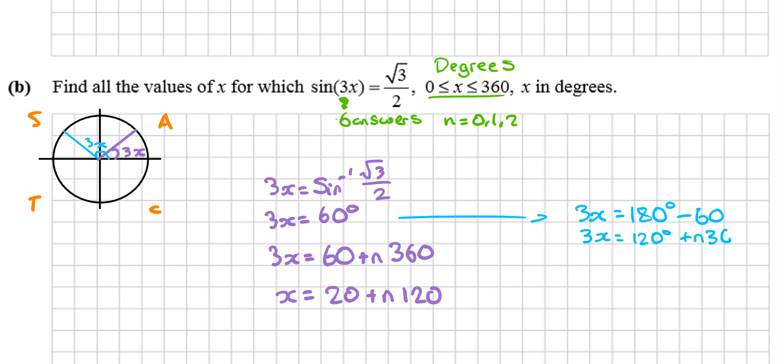But I need to add on my n(360), so then x equals 60—x equals 40 degrees plus n(120).